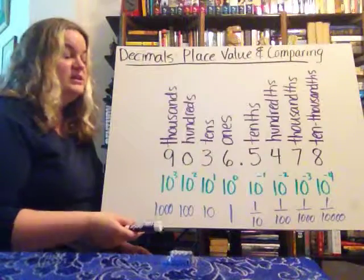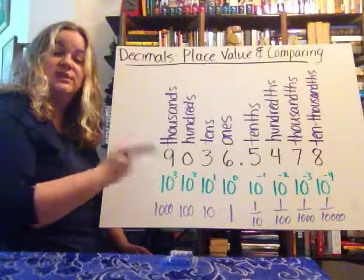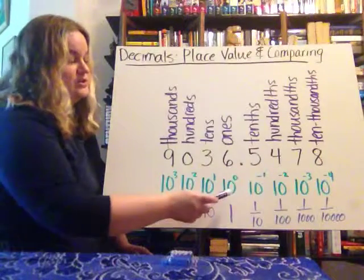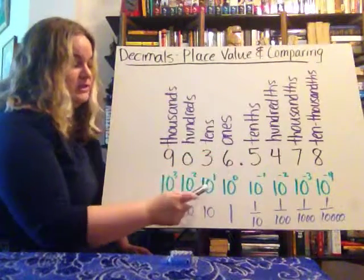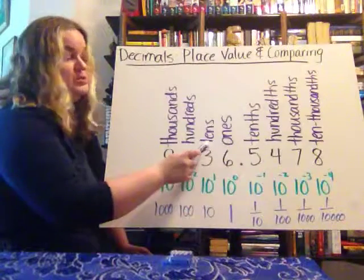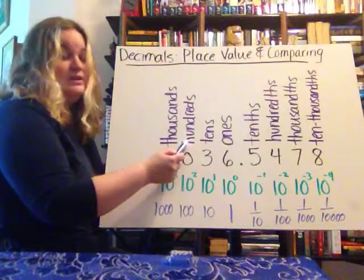The reason this is is because we have a base 10 number system. Base 10 means that all of the place values are based off of powers of ten. So for instance, ten to the zero power is one, which is why we call that the ones place. And ten to the first power is ten, which is why we call that the tens place. And ten to the second would be a hundred, which is why that's a hundreds place.